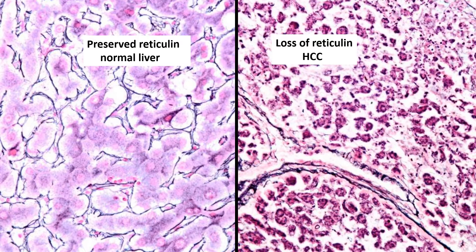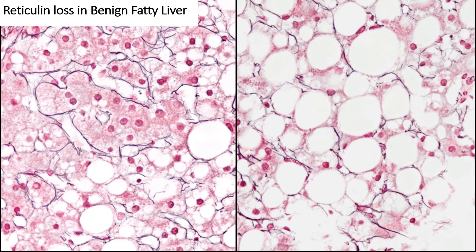Here's another important feature: the reticulin stain. This is what normal liver looks like on a reticulin stain. About half of HCCs show loss of the reticulin framework, and when you see that loss, it is essentially diagnostic of HCC. But remember to look for a positive control. It's not uncommon for the stain to fail — if it does, repeat it. One important caveat: when you have a very steatotic liver, the reticulin fibers get disrupted, so this rule does not apply to steatohepatitic or significantly steatotic livers.